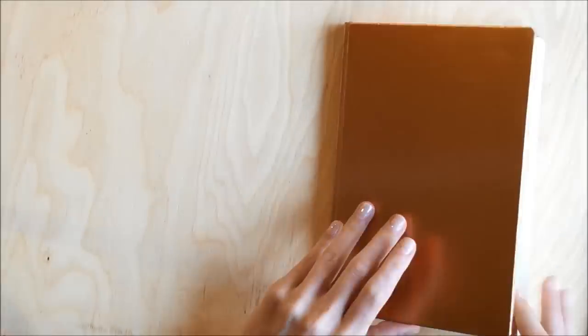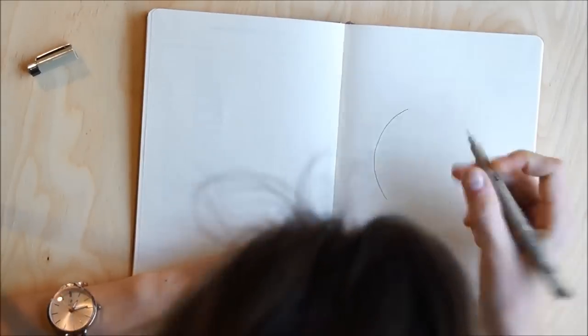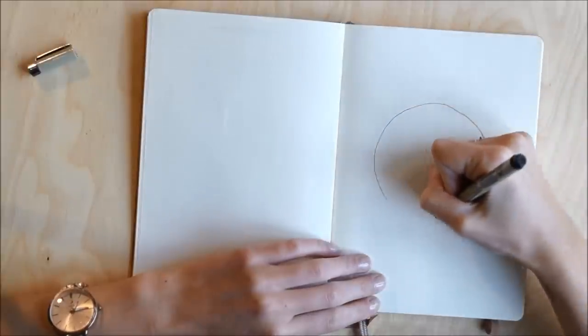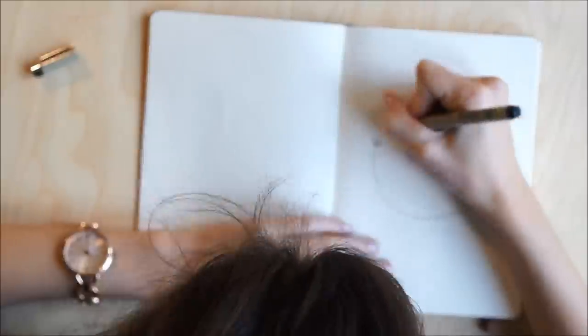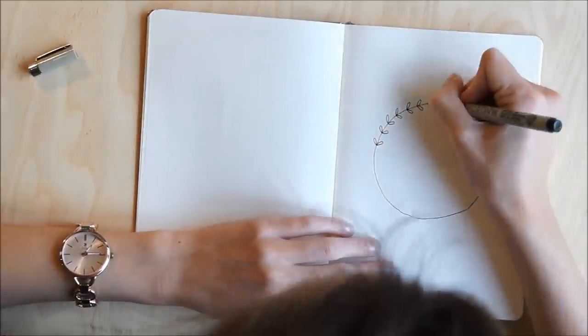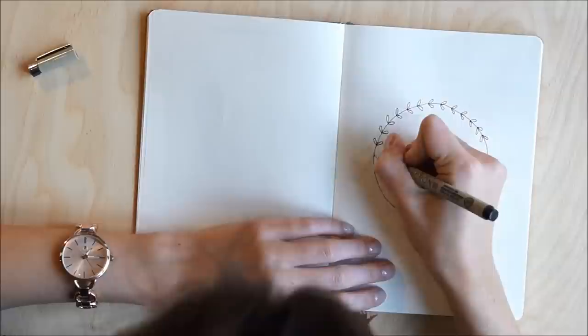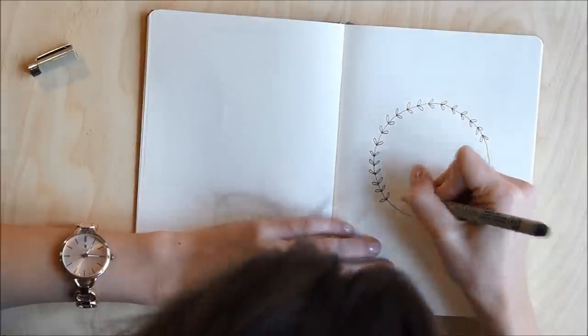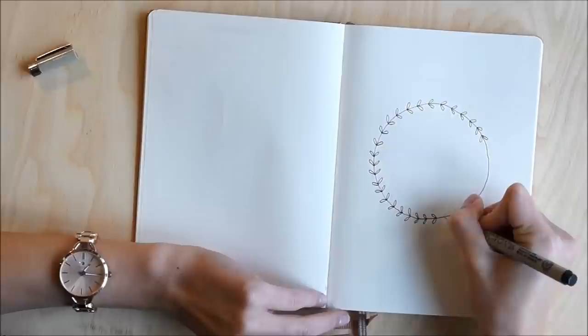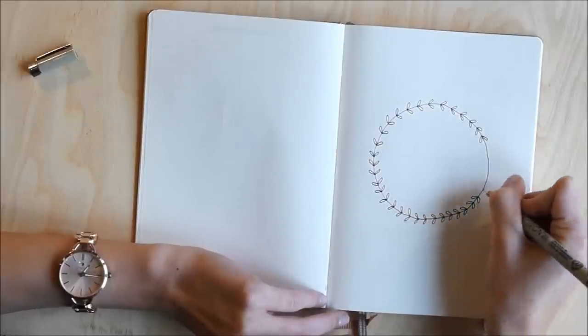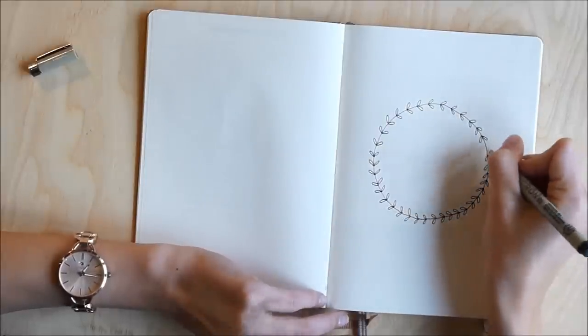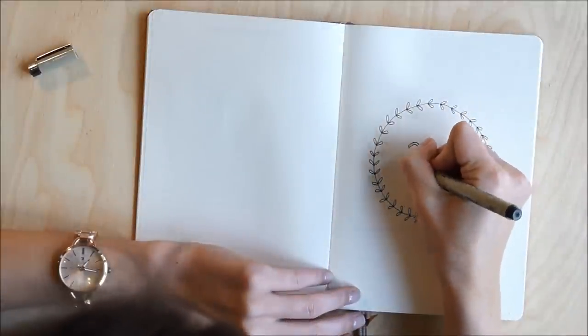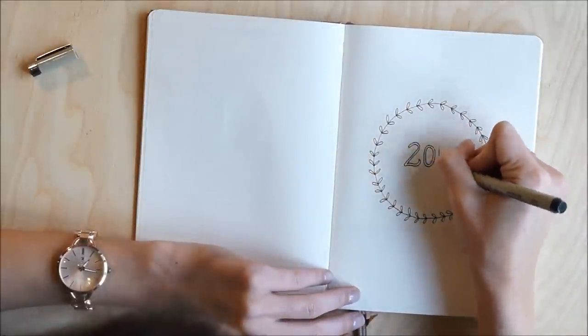Hello Bujo friends! I'm here with my 2018 setup of my new bullet journal. I'm using a Leuchtturm 1917 in copper and it's dotted. So I'm starting off my planner, my Bujo,